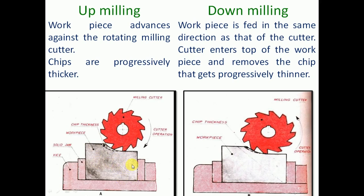In down milling, the work piece is fed in the same direction as the milling cutter. The cutter enters at the top and the chips are progressively thinner. The work piece moves in the same direction as the milling cutter. The milling cutter presses against the vice, so the work piece is firmly held in the vice.